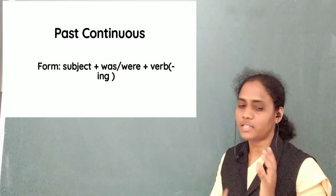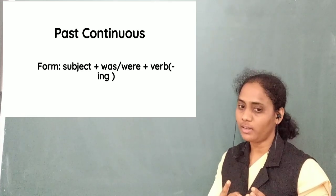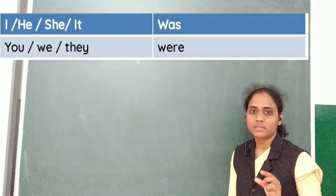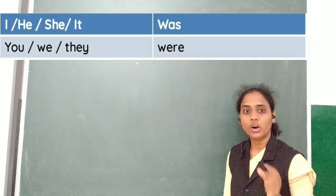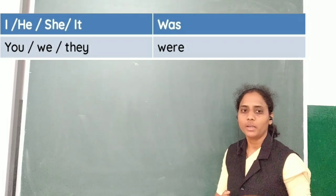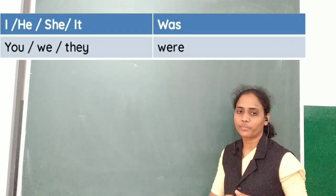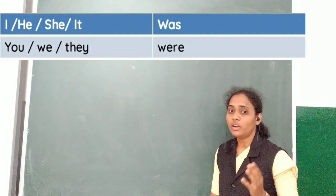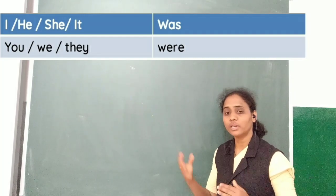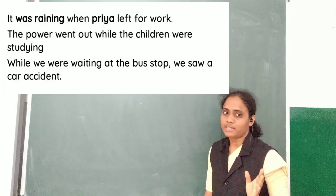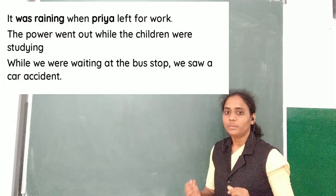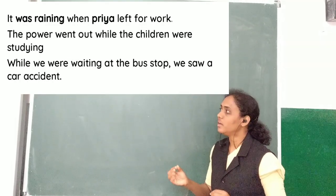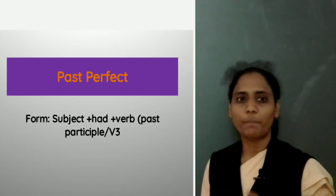We make this tense with a subject plus 'was' or 'were', plus a verb in the '-ing' form. We use 'was' for the subjects he, she, or it — or in a simple way, for the singular form. We use 'were' for the subjects we, you, or they — or for the plural form. Here are some examples: It was raining when Priya went for work. The power went down while the children were studying.